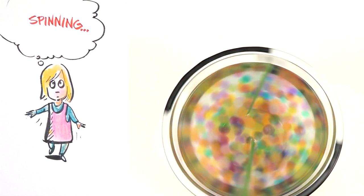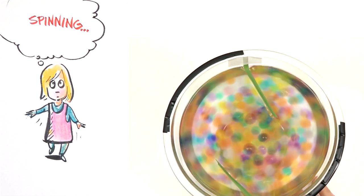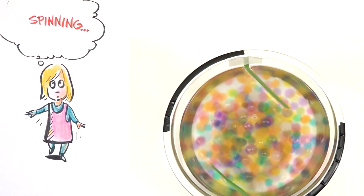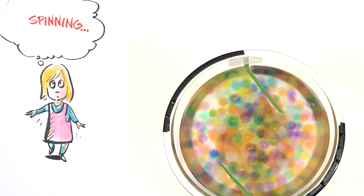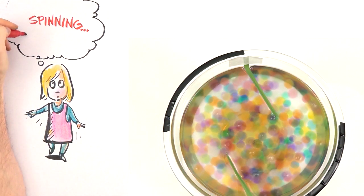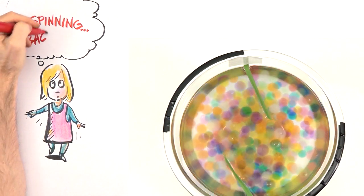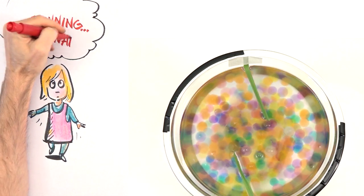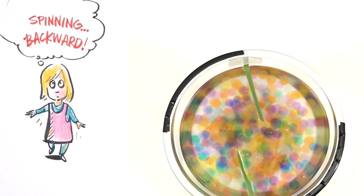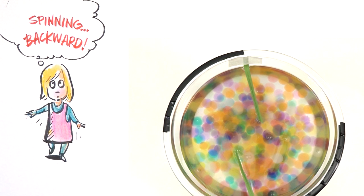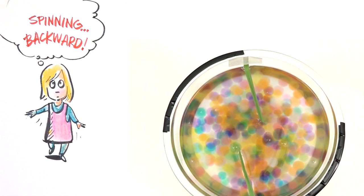Then you stop, but your ear fluid keeps going and it pushes the sensory hairs the other way, sending your brain the message that you're still spinning around, only in the other direction. You feel dizzy. You may lie down and feel like you're still spinning, but that'll pass once the fluid deep inside your ears stops moving.